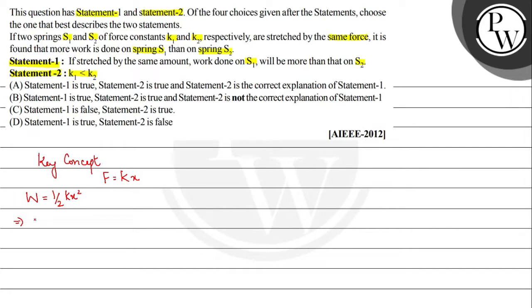Then we can write work done as half of K square X square by K. Now we know F is equal to Kx, so which means half of F square by K. So we know that work done is inversely related to K when force is supposed to be constant.